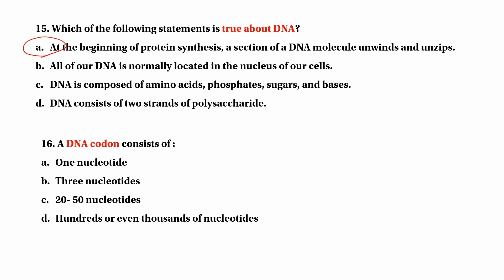A DNA codon consists of how many nucleotides? Options include 1 nucleotide, 2 nucleotides, 3 nucleotides, or 100 to 1000s of nucleotides. A codon consists of 3 nucleotides, which we can use to code for amino acids in protein synthesis.